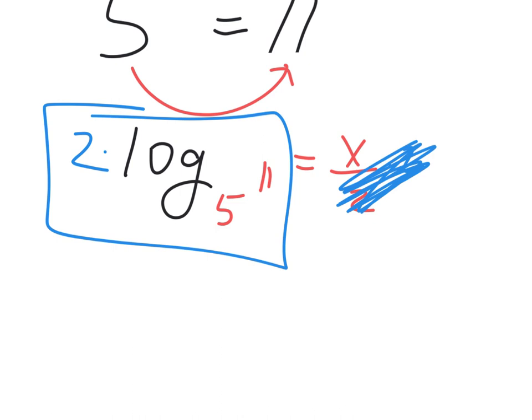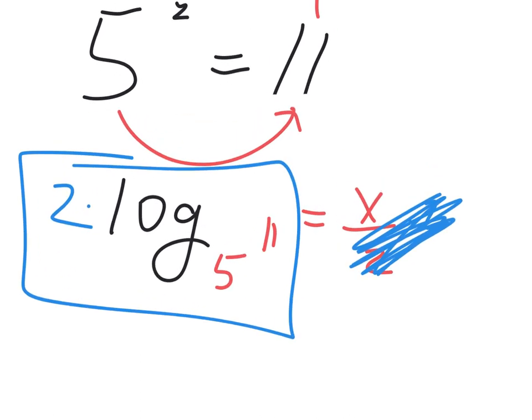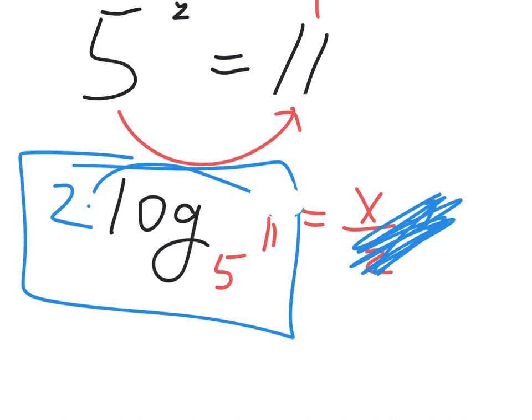Now, some of you might be remembering this little trick — could this 2 go up as an exponent? Yes, but you don't have to. You could put it in the front or up there. Personally, I think most teachers would have you leave the 2 in front. But if somebody moved it there, I'd say okay, cool — you can put it there.